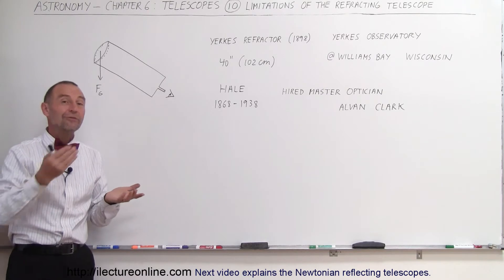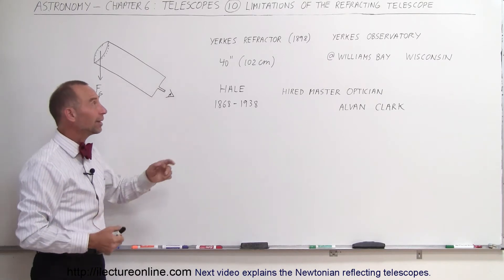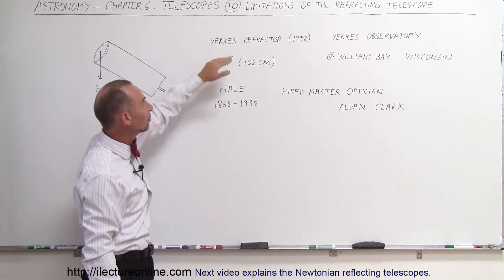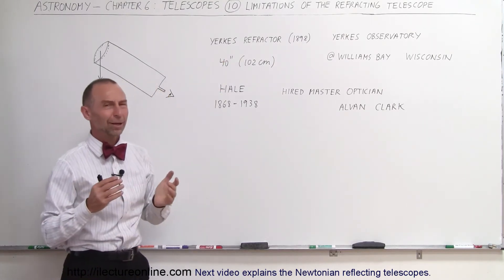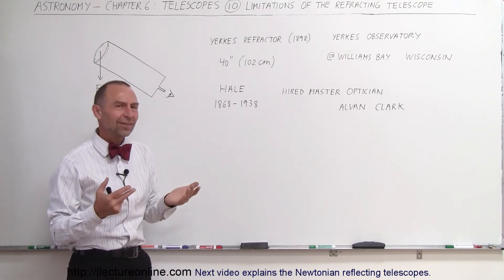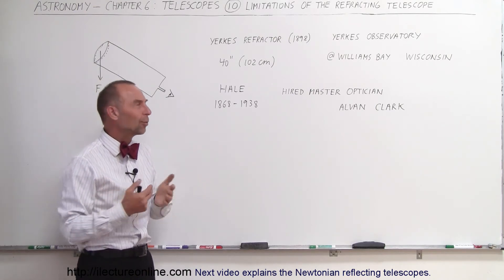So the biggest refracting telescope ever built was built in 1898, more than a hundred years ago. It was called the Yerkes refractor at the Yerkes laboratory, I can barely pronounce that name, at Williams Bay, Wisconsin. So why didn't they build any bigger telescopes after that?